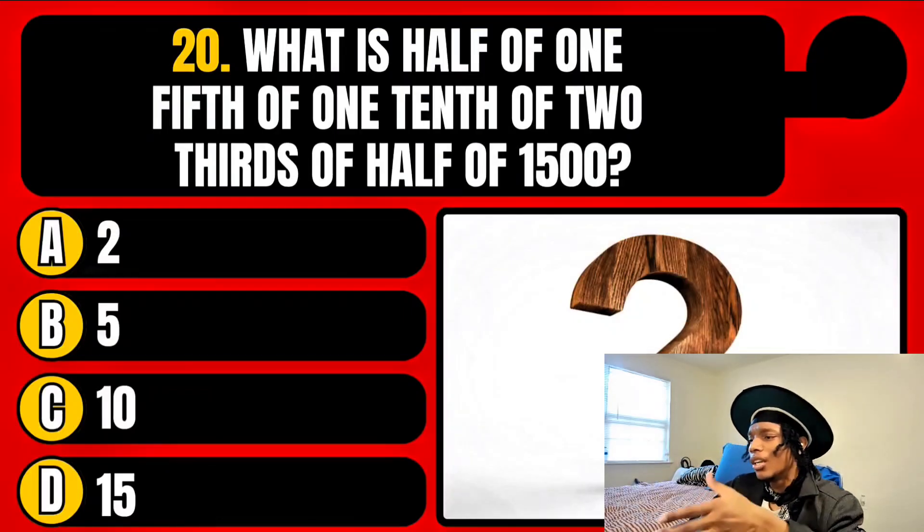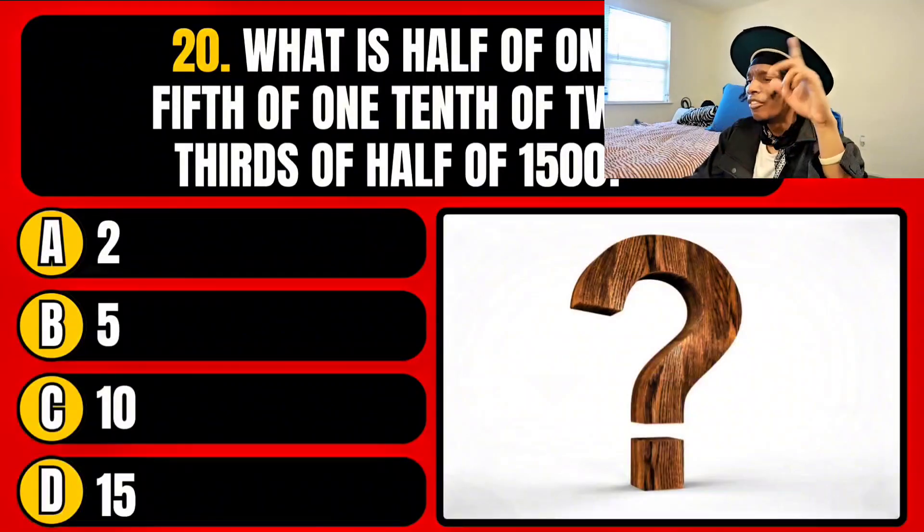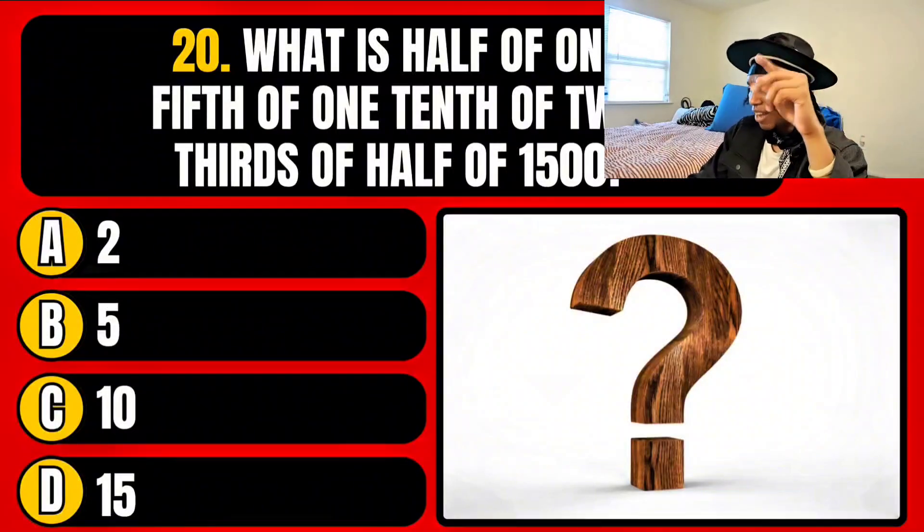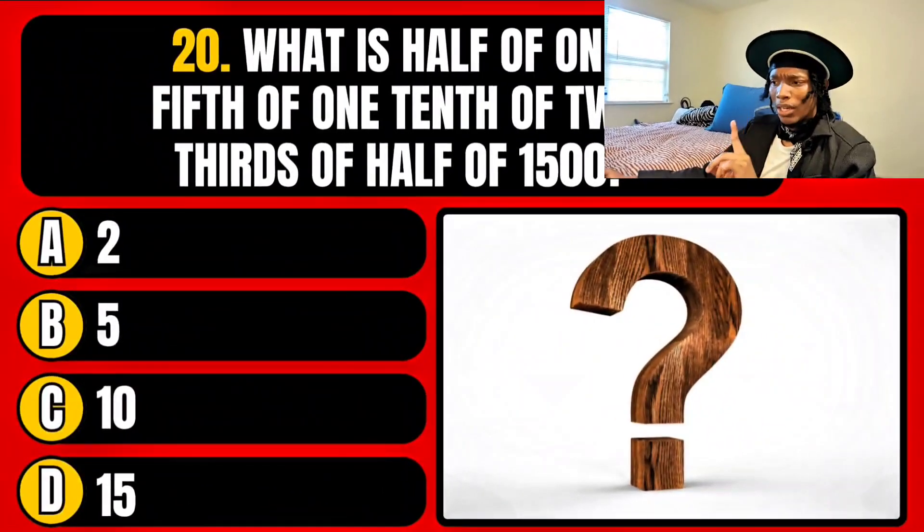What is half of one fifth of one tenth of two thirds of half of — what the f***? A half of one fifth is one over two point five. What of one tenth? A fifth of a tenth is a half, and of two thirds — a tenth of two thirds is a thirtieth. So if you take a thirtieth, a two point five, and a half, then that would equate to five.